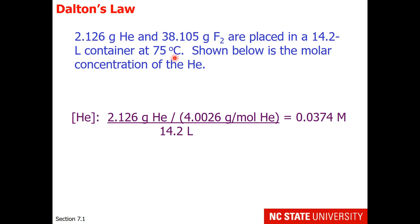Here's how you would get the molar concentration of helium. You'd start with grams of helium divided by the molar mass to get the moles and then divide by the volume of the container. So the concentration of helium, which we represent by putting helium in square brackets, is equal to 0.0374 molar. Remember that molar concentrations are in units of moles per liter.